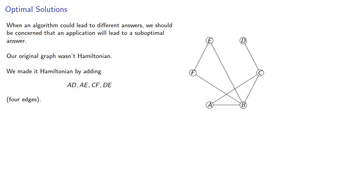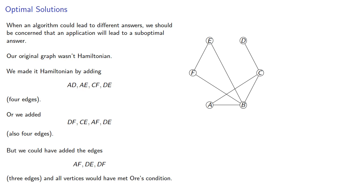Or we could have added a different set of four edges, but we could have also added just three edges. And all vertices would have met Orr's condition, and a Hamilton cycle would exist.